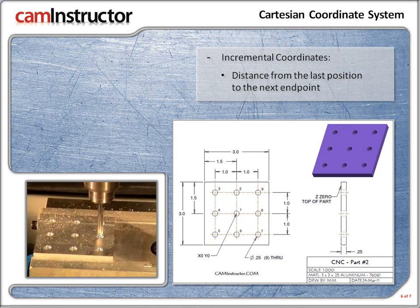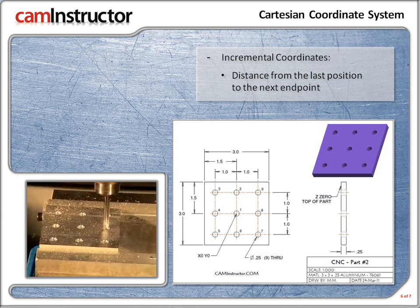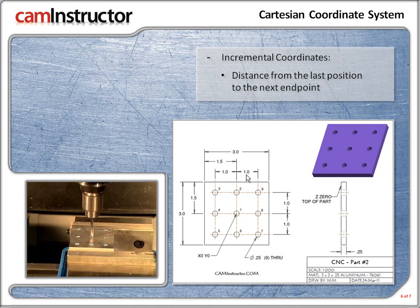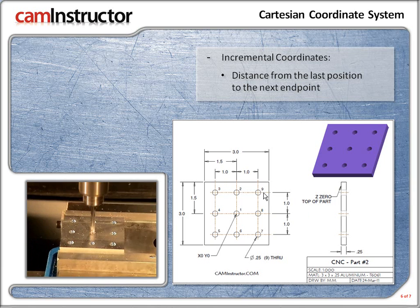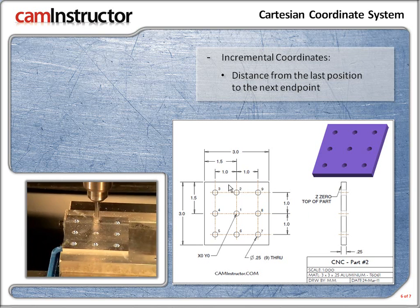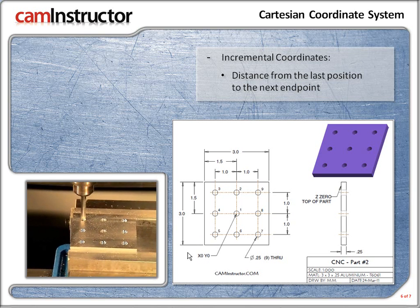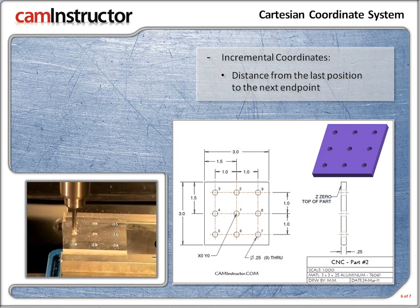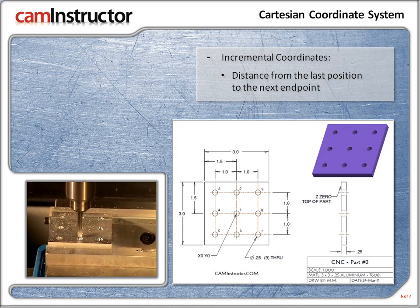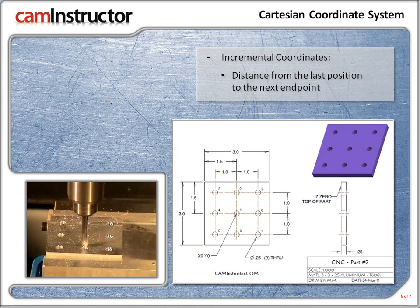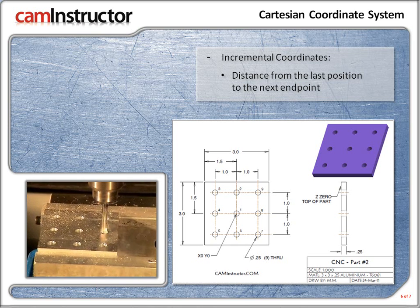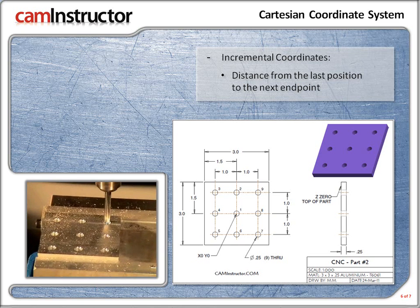Now take a look at the drawing. The incremental distances between the centers of the holes are 1 inch. The video shows the part being drilled on the CNC machine. When the machine moves from hole to hole it is moving 1 inch incrementally. Some of the movements are positive. Some are in the negative direction.